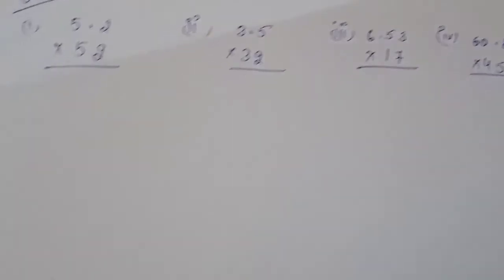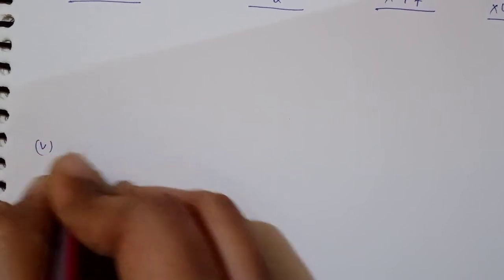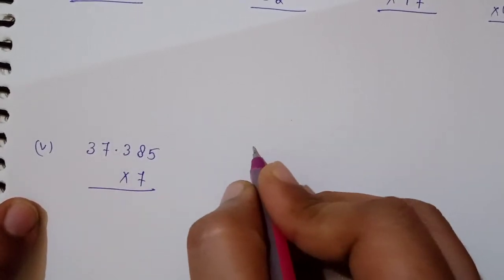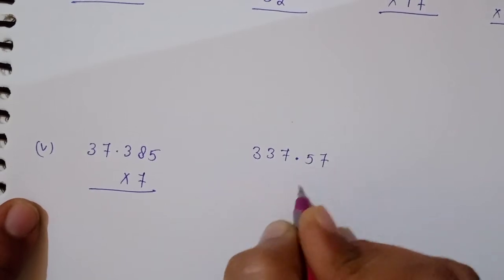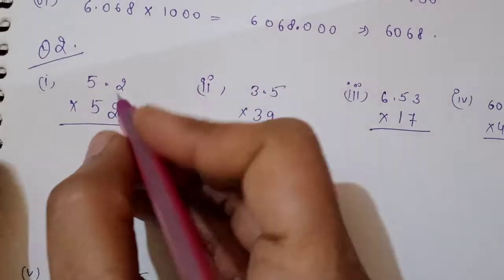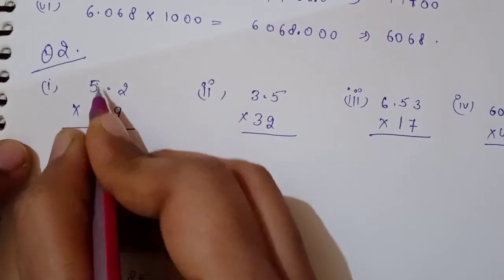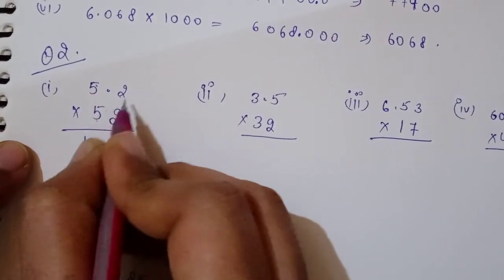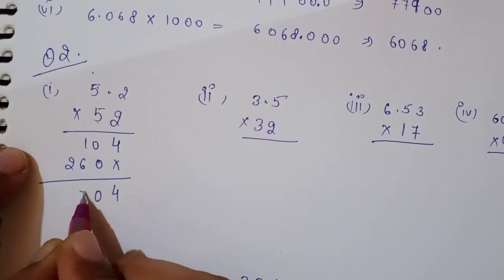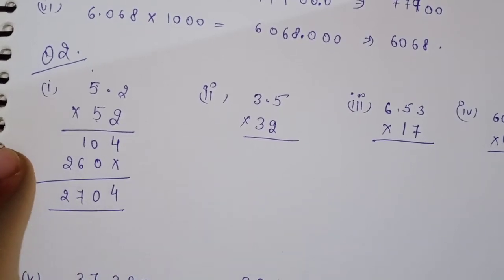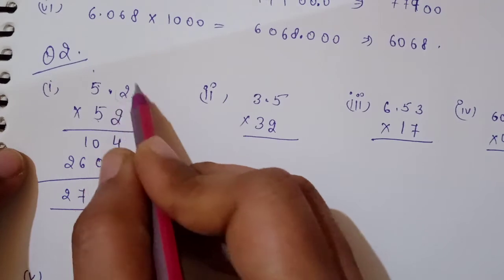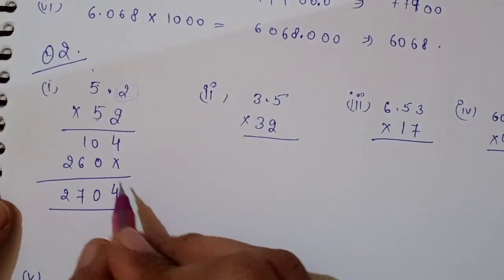The fifth question is 37.385 × 7, and 37.57 × 3. Now let's see the solution. Multiplying 5.2 × 52: 2×2=4, 2×5=10, carry 1; 5×2=10, 5×5=25, plus 1 = 26. Sum up the numbers: 4, 0, 6, 1, 7, 2. Count the decimal places — only one — so put the decimal after one digit from the right.